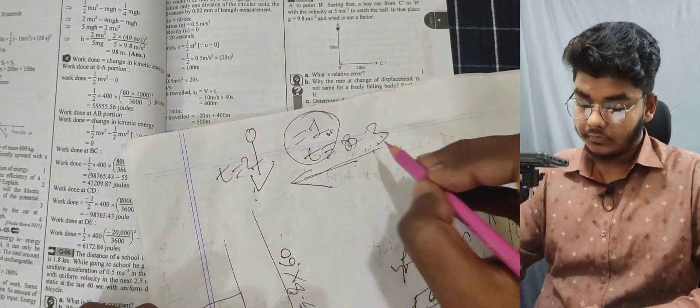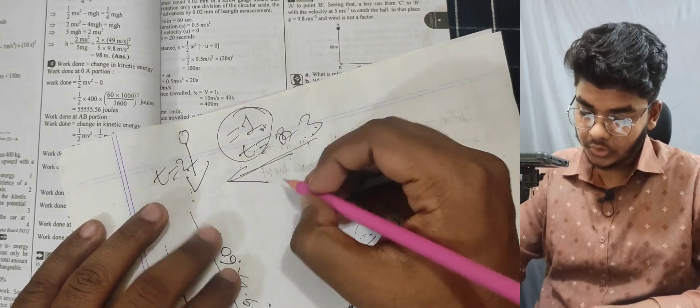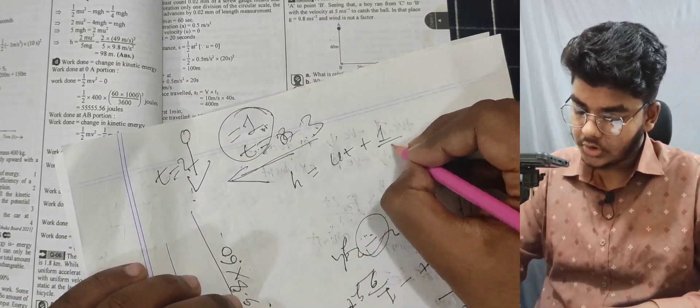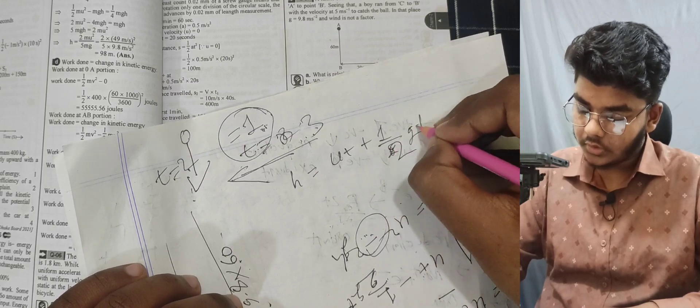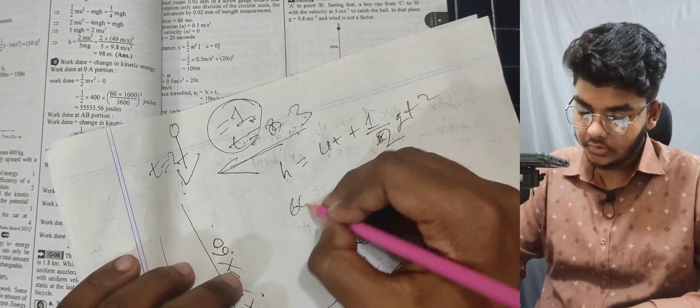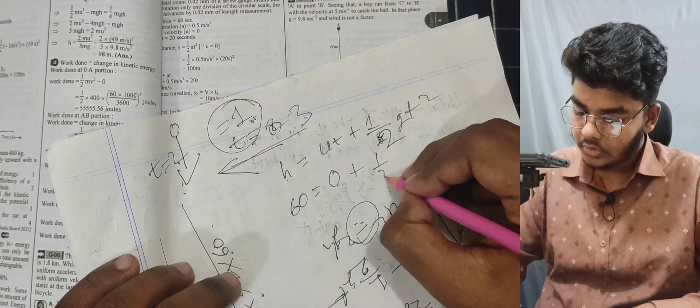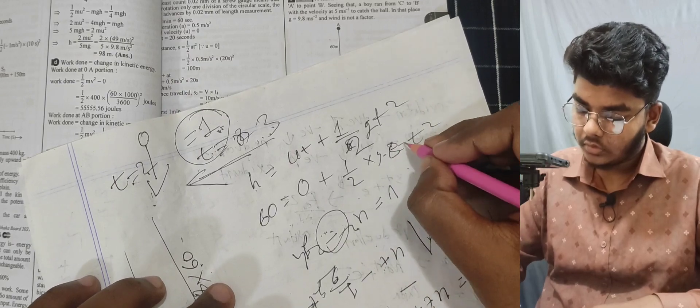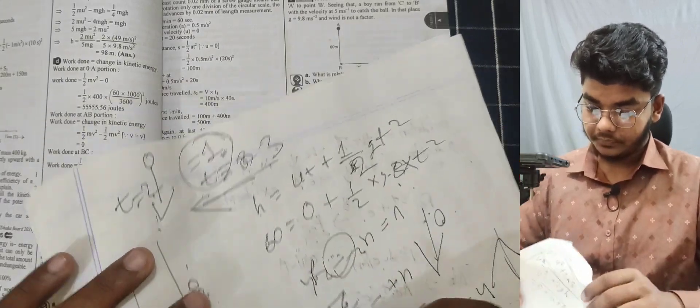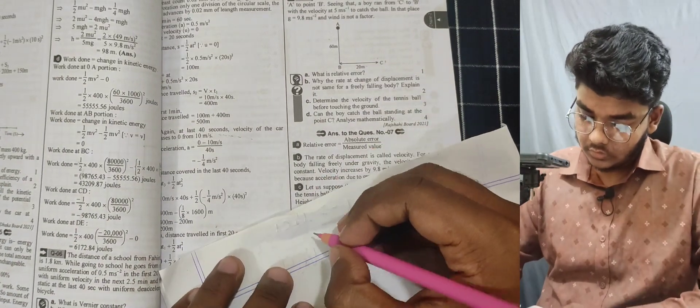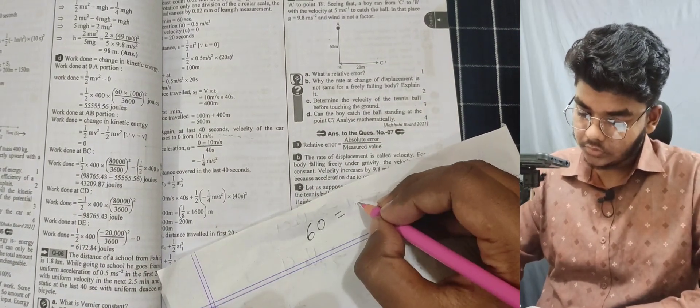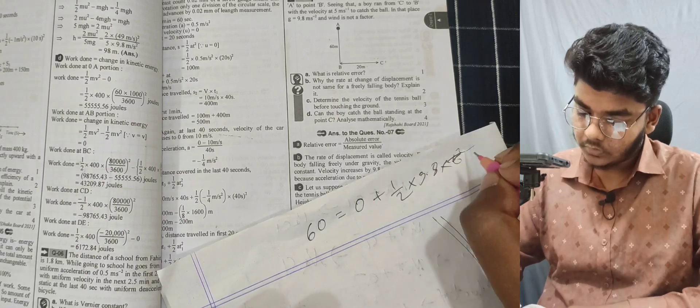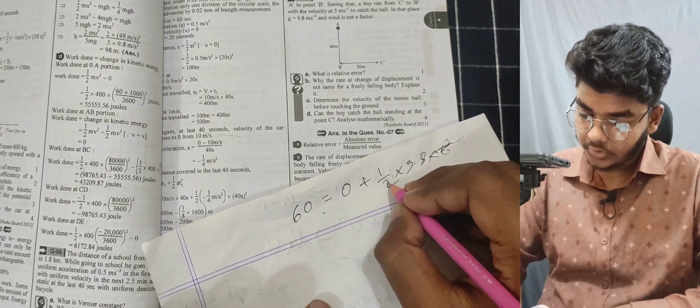Using h = ut + ½gt². Distance is 60 meters, initial velocity 0, g = 9.8. So 60 = 0 + ½ × 9.8 × t².